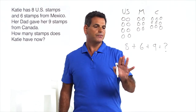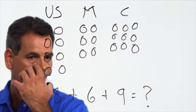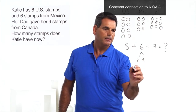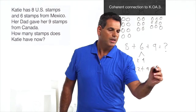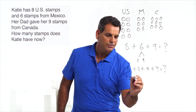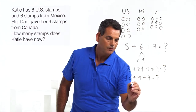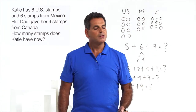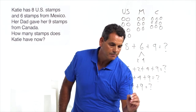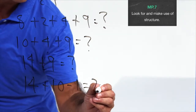Let's look at some properties of numbers and operations that we can use to solve this. This is not easy to do in your head without utilizing some thinking strategies. Let's start by decomposing this six into a two and a four. So now we have eight plus two plus four plus nine equals question mark. That gives us a ten: ten plus four plus nine. Fourteen plus nine — using the strategy of adding ten and subtracting one — equals fourteen plus ten minus one, which equals twenty-four minus one, which is twenty-three.